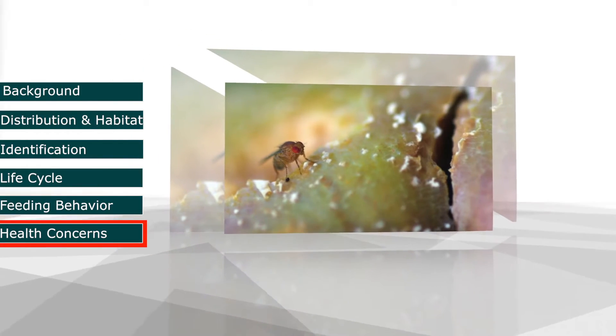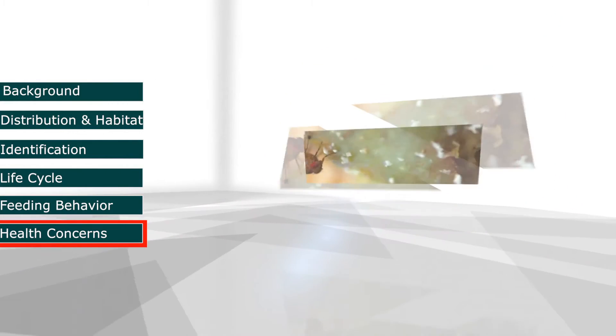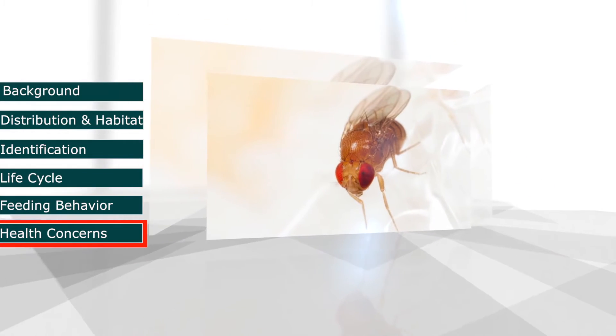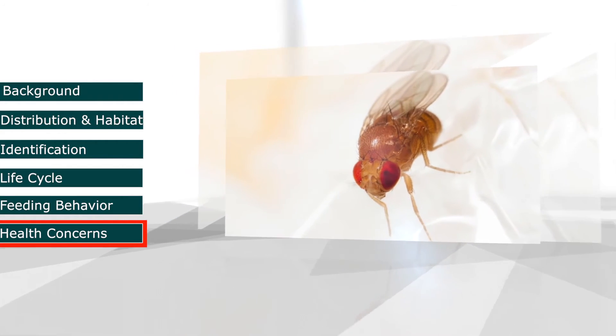Fruit flies are often associated with decaying material, uncooked food, and excrement, and therefore may act as a vector of disease.